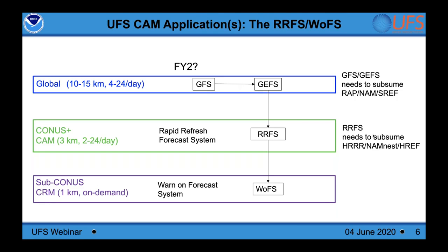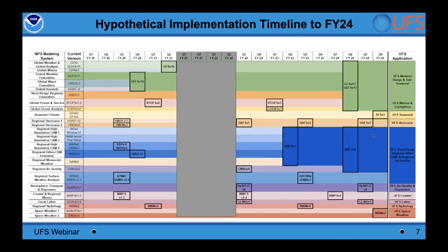The transition paradigm has a global system running at least four times per day, plus a unified Rapid Refresh Forecast System covering CONUS and outside-CONUS areas running nominally hourly, with ensemble forecasts subsetted perhaps four times per day, and a finer 1 km Warn-on-Forecast System for initial operating capability. A notional NCEP schematic shows consolidation toward just a global and a short-range regional application by FY2024 and beyond, with far fewer model systems than we have now.